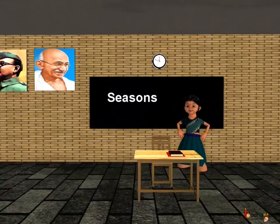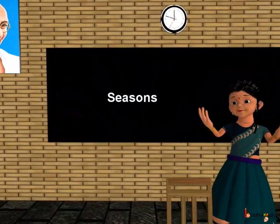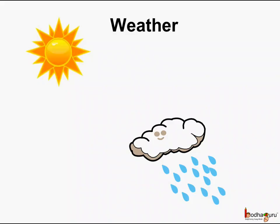Good morning children. Today we shall learn about seasons. We already know what weather is. The change in day to day condition is called weather. Some days are sunny while some days might be cloudy or rainy. It might rain in the afternoon but by the evening it might become hot. So the weather keeps changing.